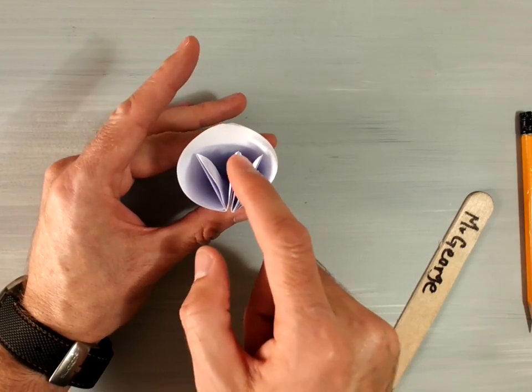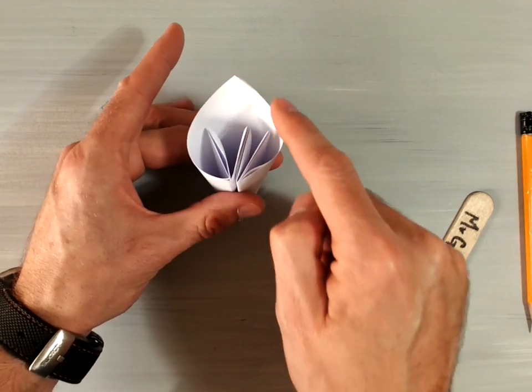So you should have three of these pleats in here, and then the petal on the outside.